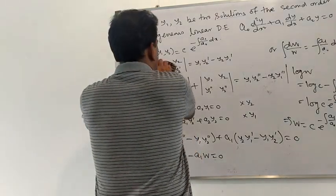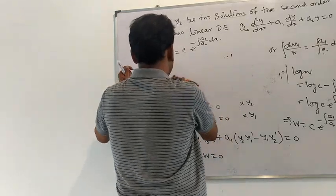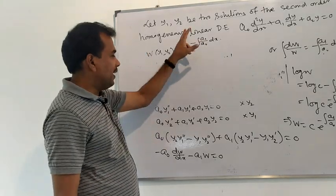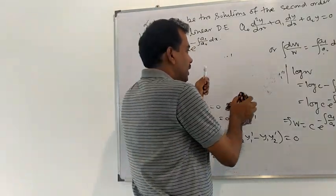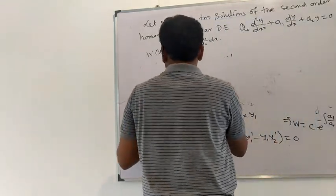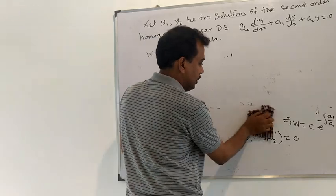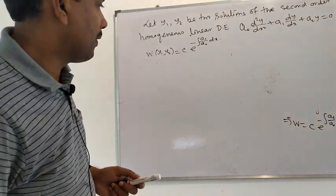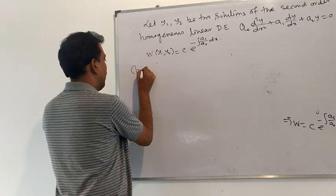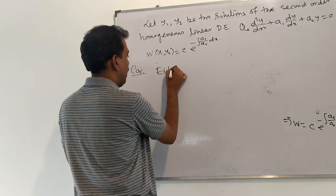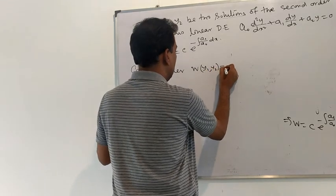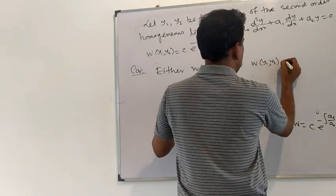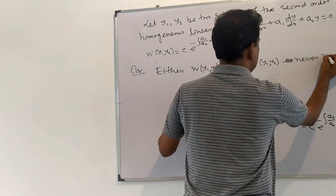Now we conclude: if C = 0, then W(y1, y2) is always zero. If C is not equal to 0, then the Wronskian is never zero, because the exponential function is always positive. So either W(y1, y2) = 0 for all x, or W(y1, y2) is never equal to 0 for any x.